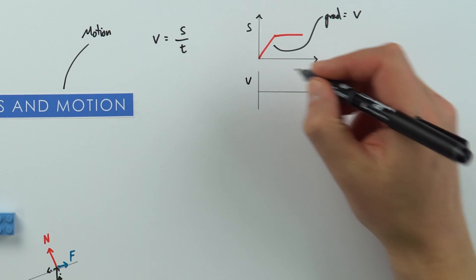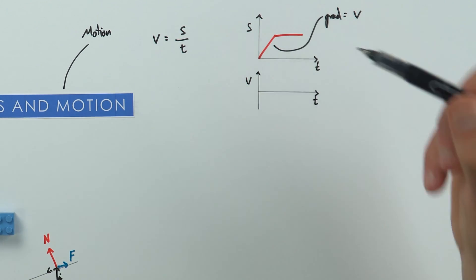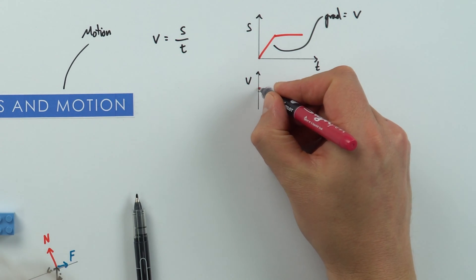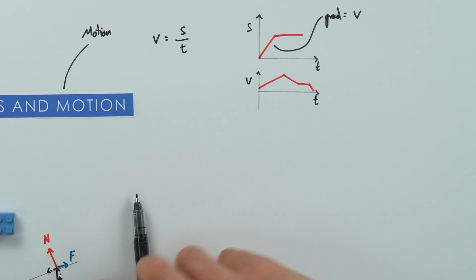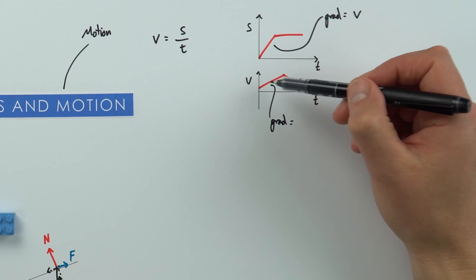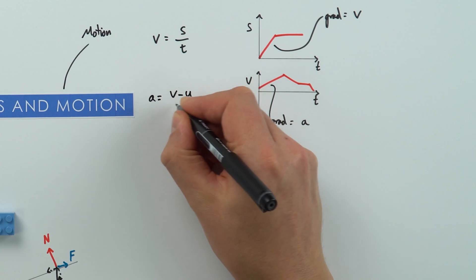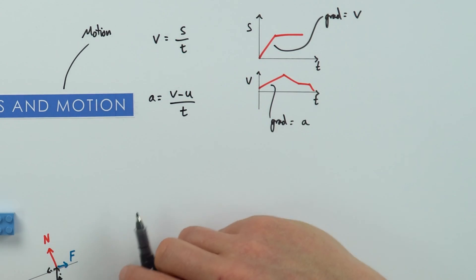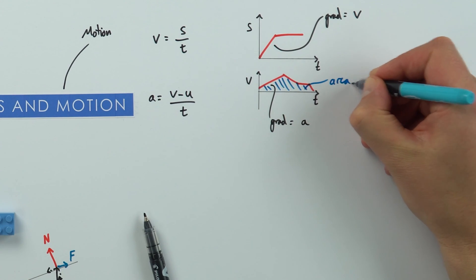On a velocity-time graph, velocity can have positive or negative values. There are two key features: first, the gradient equals dv/dt — the rate of change of velocity — which is the acceleration. Second, the area underneath the velocity-time graph is equal to the displacement of the object. These are revisions from GCSE that we develop further at A-level.